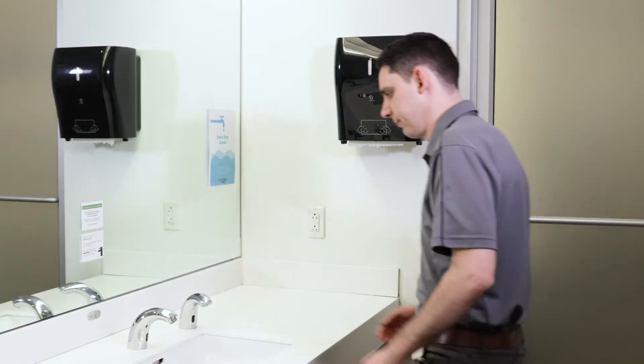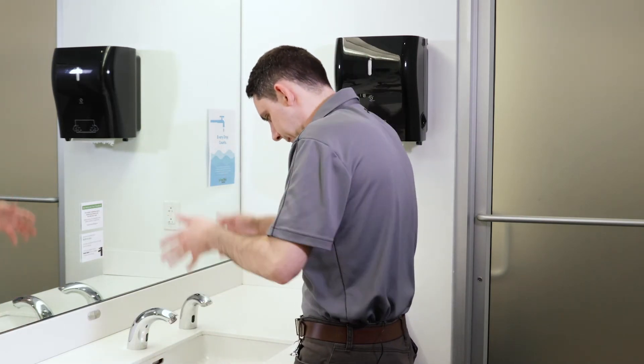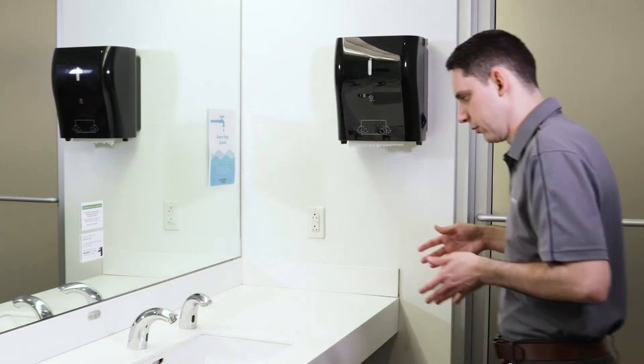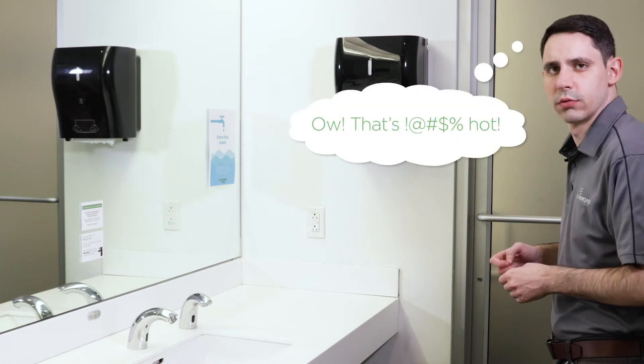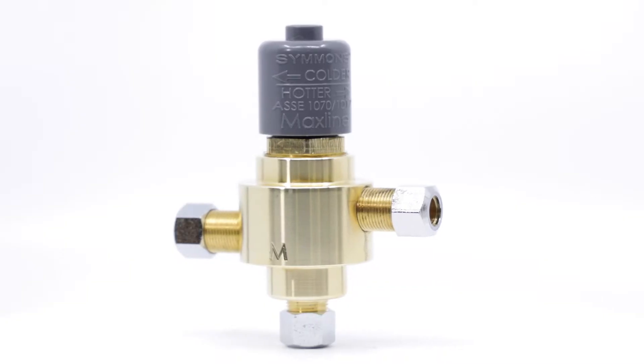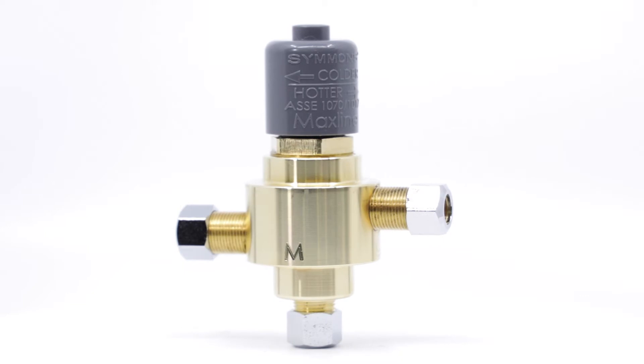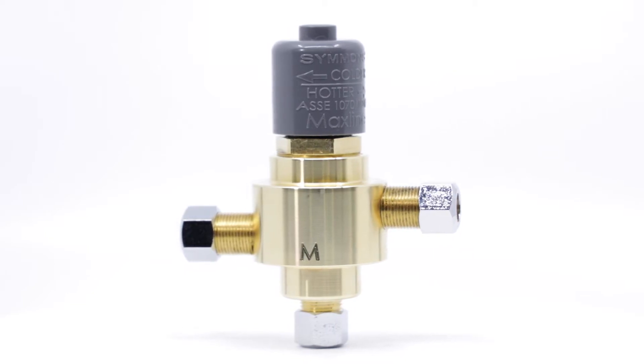In most commercial situations, the temperature of the hot water supply in the building is much higher than what is allowed by code for hand washing. The MaxLine TMV is a simple and reliable way to temper that water to a safe and acceptable temperature.